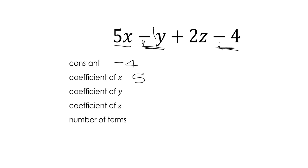And remember, if you've got that minus sign, you need to include that. It's negative 1, the coefficient of y. Coefficient of z is nice and easy. That's 2. And the number of terms, well, separate terms are separated by minuses and pluses. So we've got 1, 2, 3, 4 terms. Nice and easy.